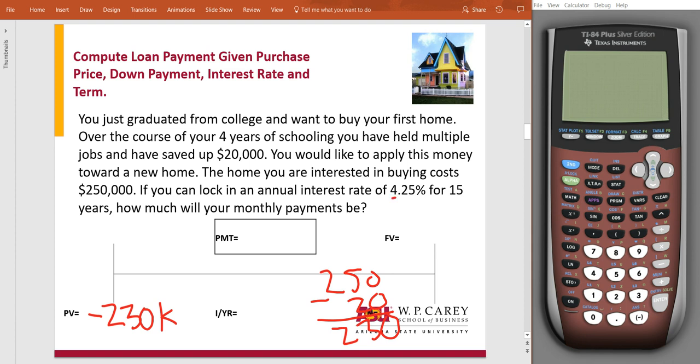It says that our interest rate is 4.25%, and our future value, we don't want to have anything left after that 15 years. So our N, oh, looks like I covered it up, but N is right there.